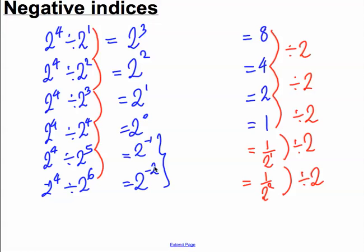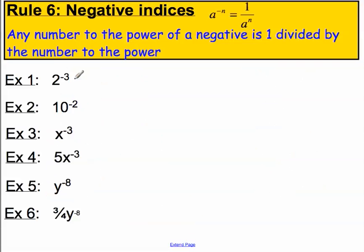So we can see a pattern here. 2 to the minus 2 is 1 over 2 to the positive 2. In general, 2 to the minus N will equal 1 divided by 2 to the positive N. And we could have chosen any number as our base, not just 2. So that gives you a feel for where a negative index notation might come from. Let's do a few examples. In general then, a base number to the negative N is 1 over that base to the positive N.